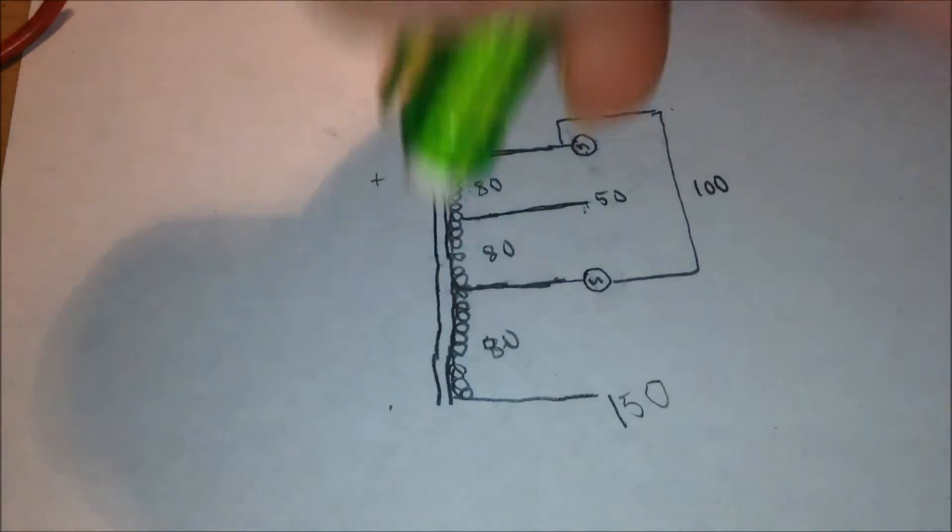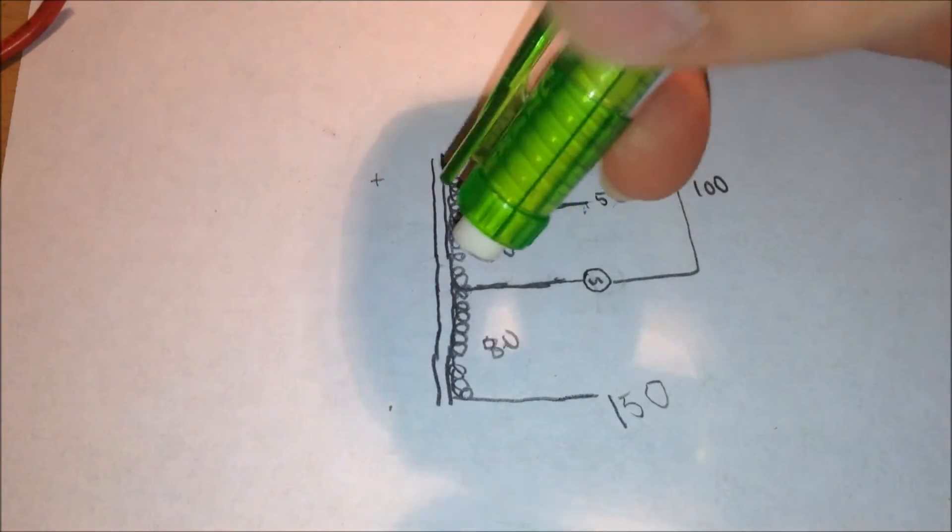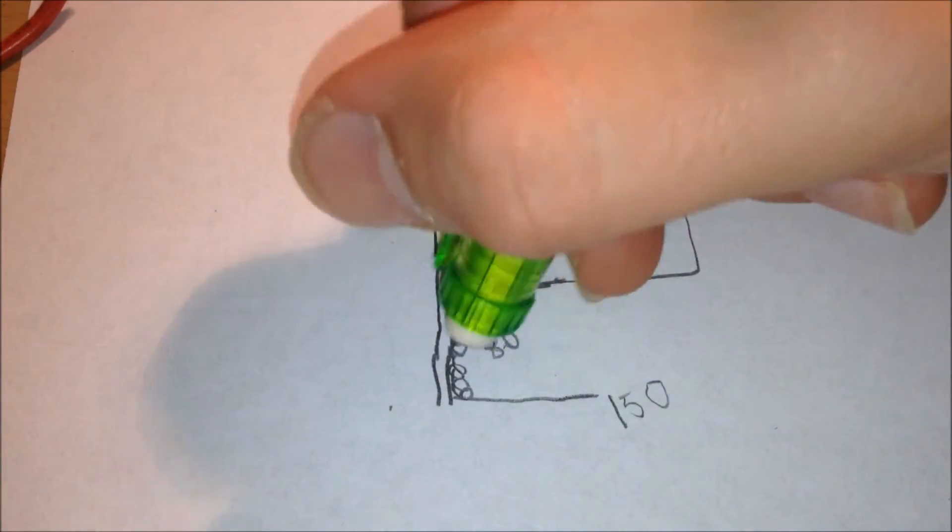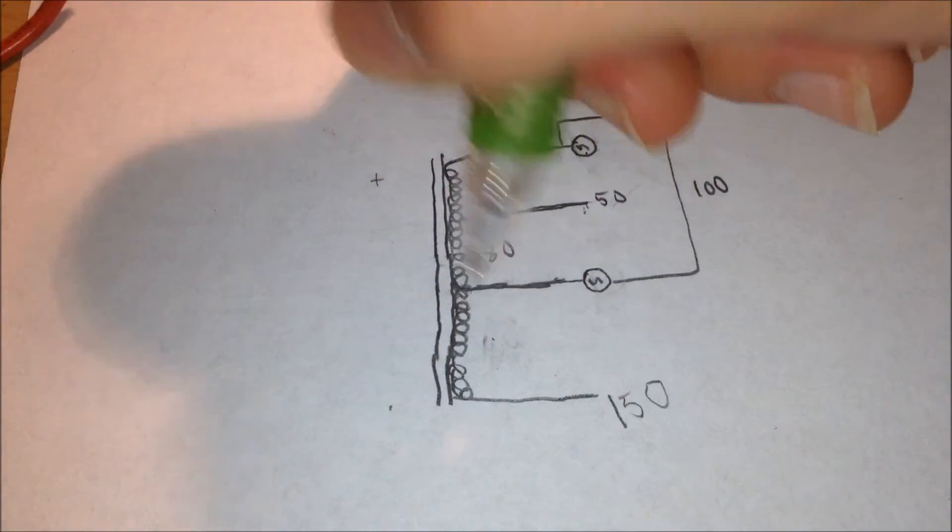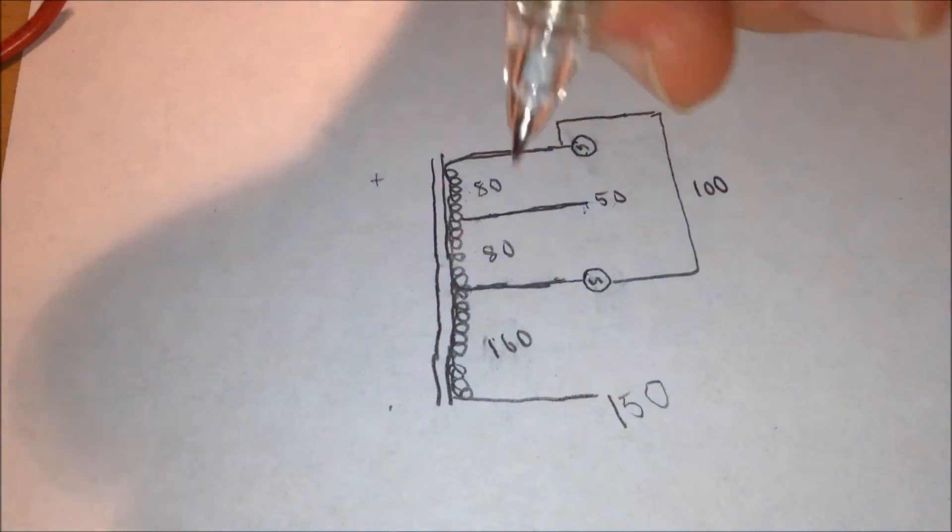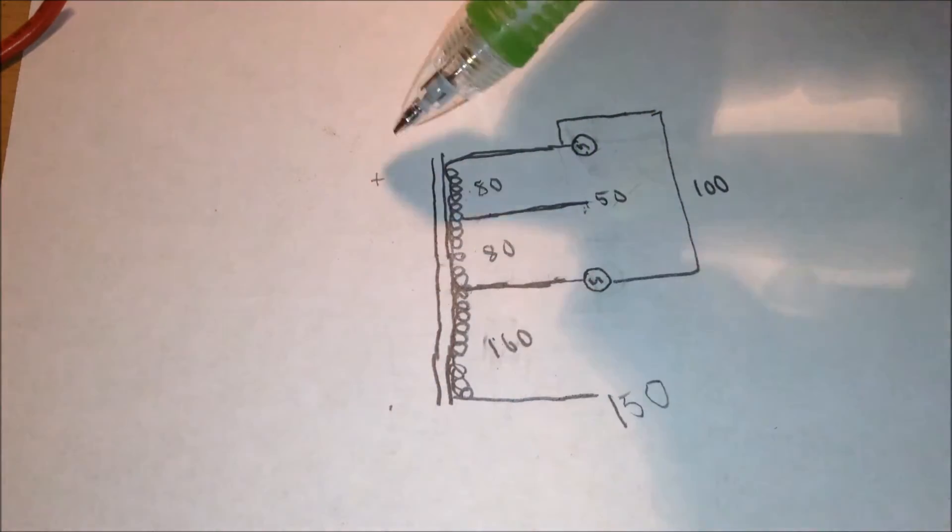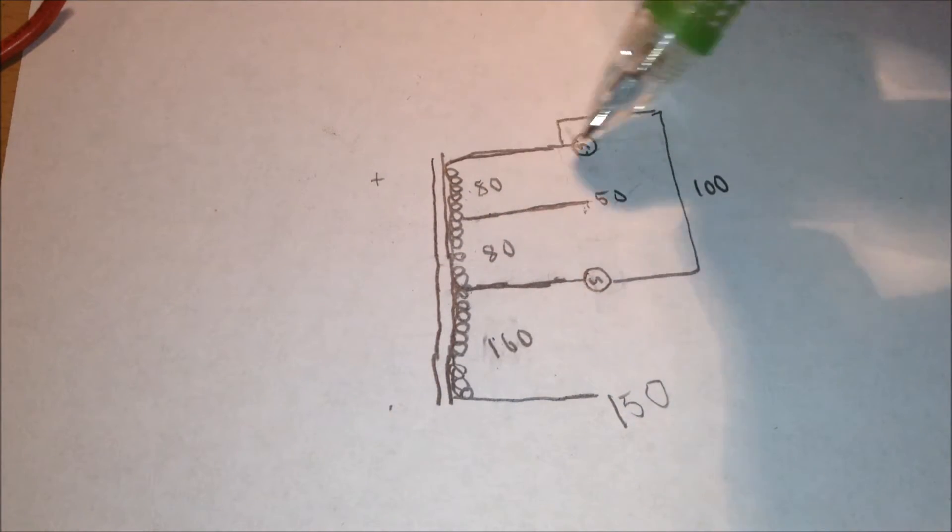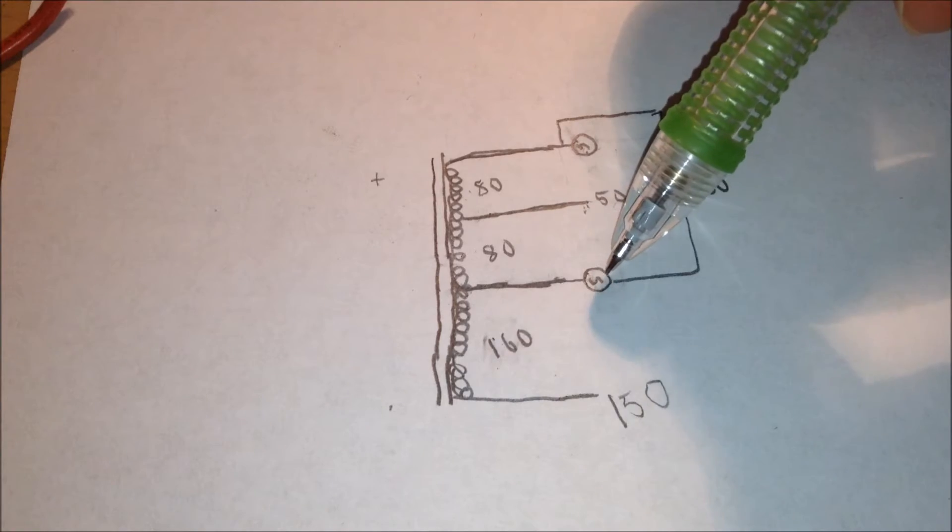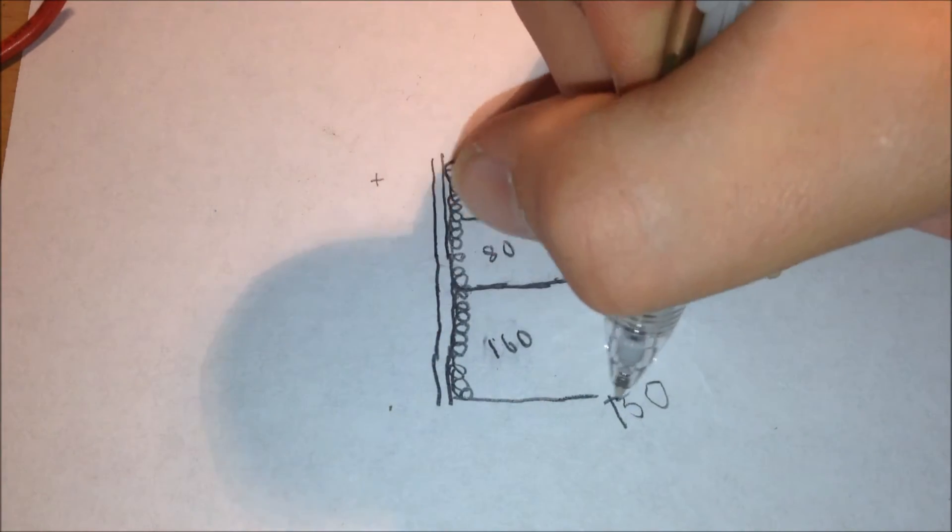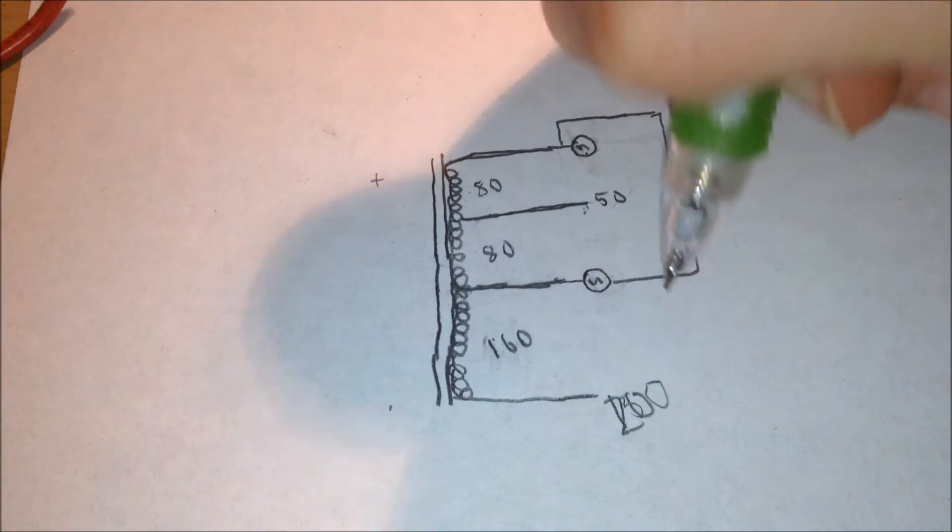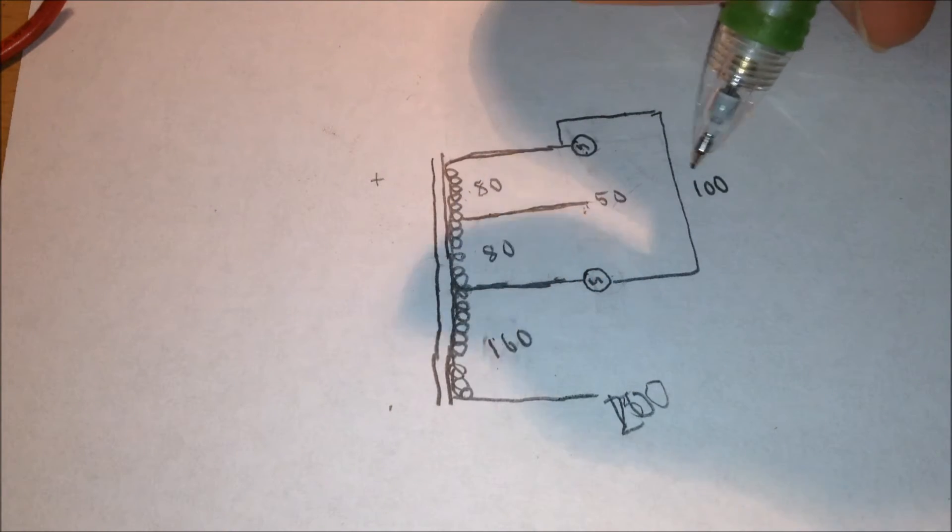Now the cool thing about autotransformers is by changing these numbers, you can get different voltages. Let's say I moved this 80 up to 160 turns. Now because there's 160 turns between this lead and this lead, and 160 turns between this lead and this lead, it will double the voltage. So that'll be, instead of 150 volts, 200 volts, which is double of the input voltage.